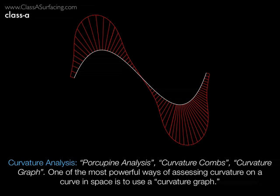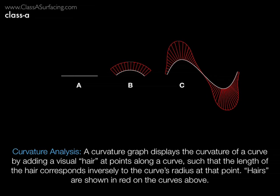As you can see here, the long red lines represent a small radius, or a large amount of curvature. As you can see in curve A, a line has no curvature comb because it has no radius — or, better put, it has an infinitely large radius.